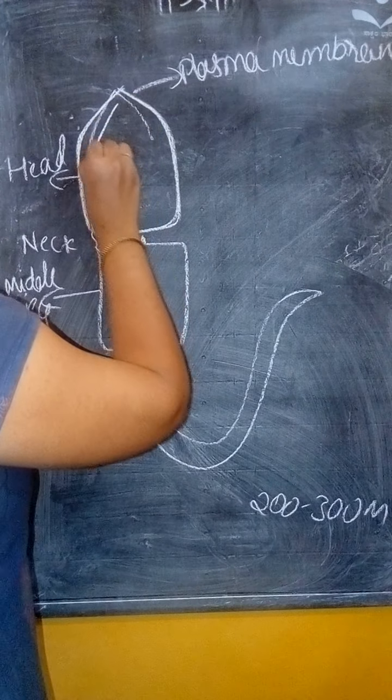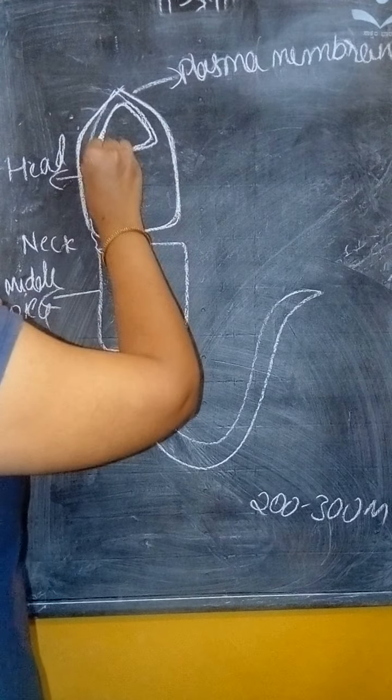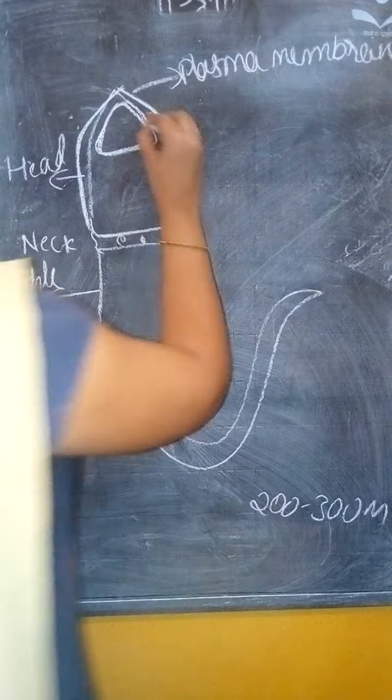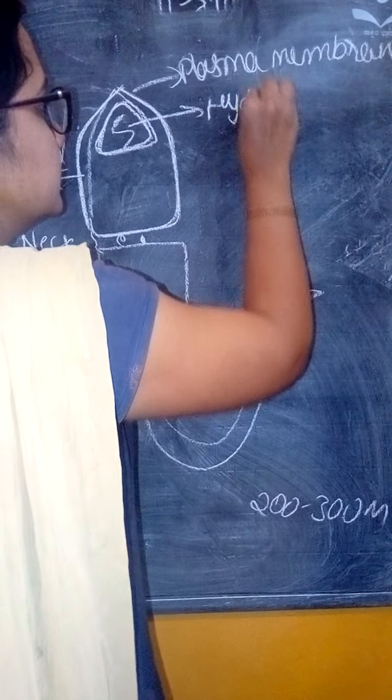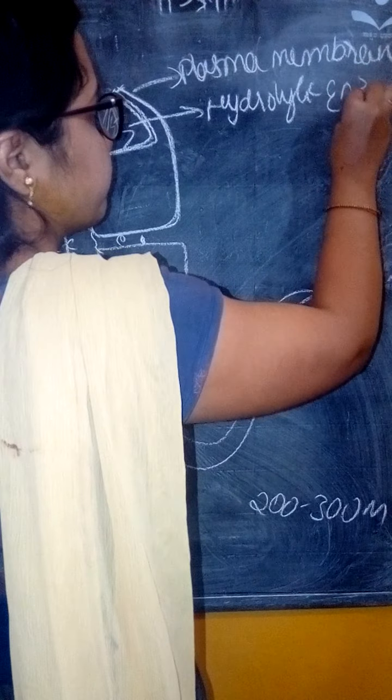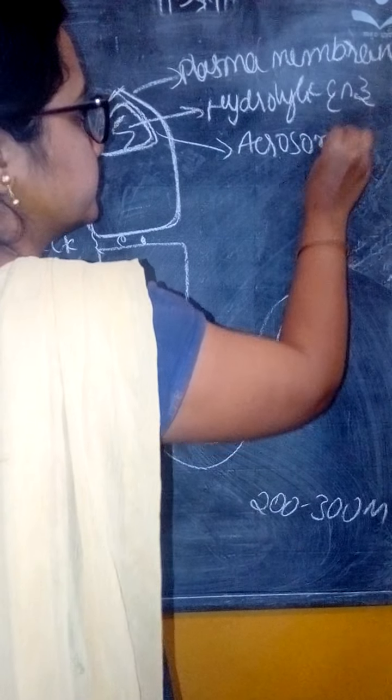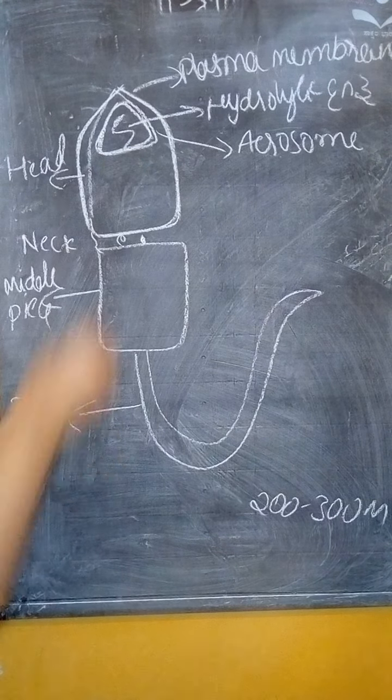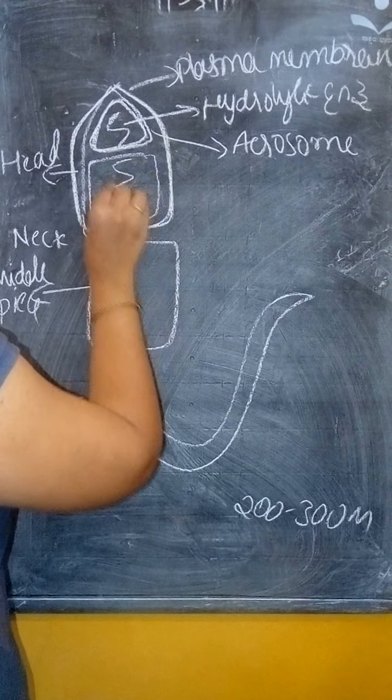Then there is a strong material present. It consists of an enzyme - which enzyme? Hydrolytic enzyme. This is called the acrosome. I am talking about the head, where this type of structure is found.